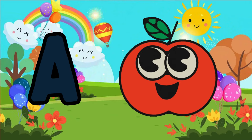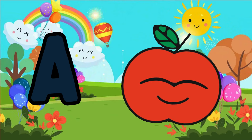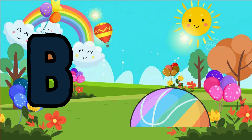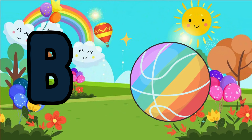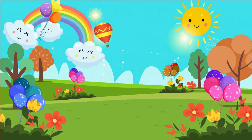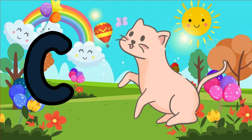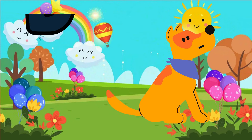A is for apple, a-a-apple. B is for ball, b-b-ball. C is for cat, c-c-cat. D is for doll, d-d-doll.